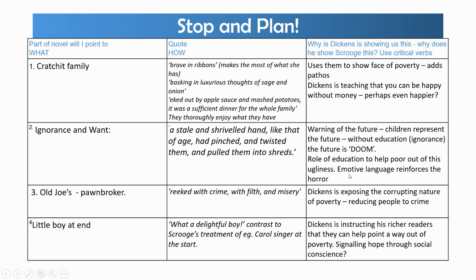Remember that word 'doom' that's written on the boy's forehead. In paragraph three we might look at Old Joe's, where the thieves bring Scrooge's possessions to sell them, and look at what Dickens is showing us about the corrupting nature of poverty. Then as a contrast, looking at the little boy at the end of the novel, we might point back to the carol singer that Scrooge treated badly at the start in Stave One, and contrast that to his delight and generosity to this little boy. Is Dickens perhaps instructing his richer readers that they could help to point a way out of poverty, signalling hope if we have a social conscience?